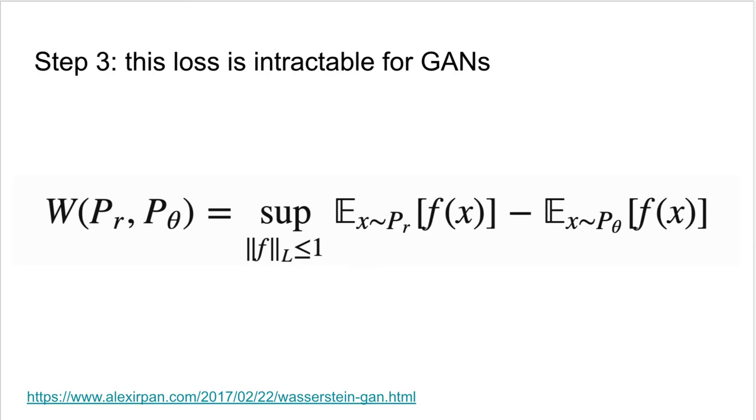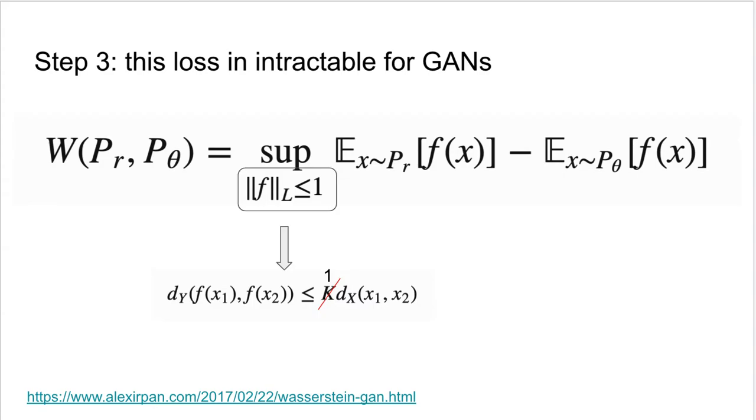The problem is that this distance is intractable. Luckily, there is an alternative equivalent expression which is easier to approximate. It says that the Wasserstein distance is the highest difference, on average, of any function between real and generated inputs. As long as this function is a 1-Lipschitz function.